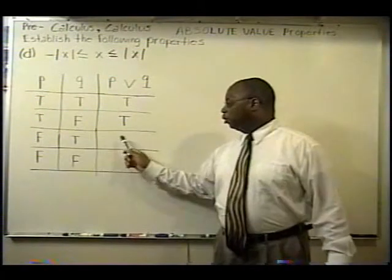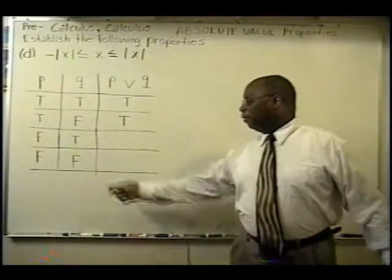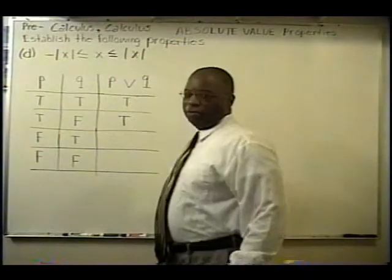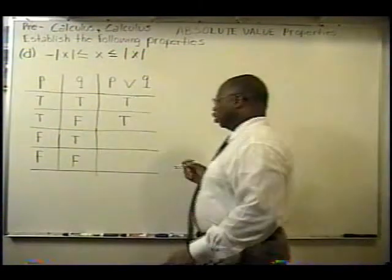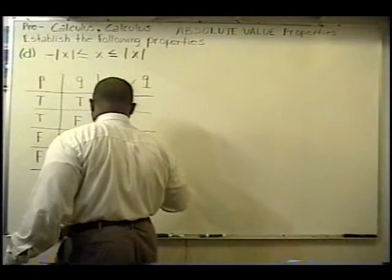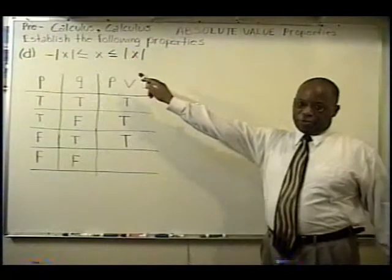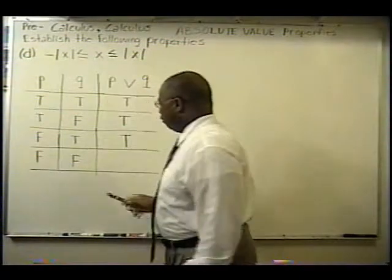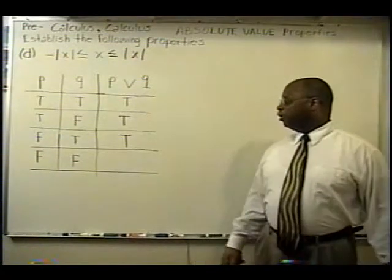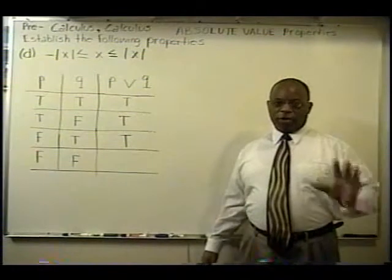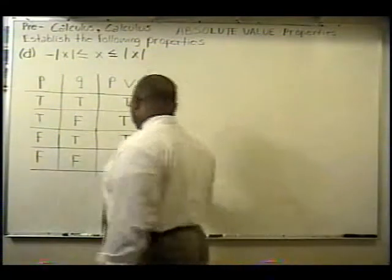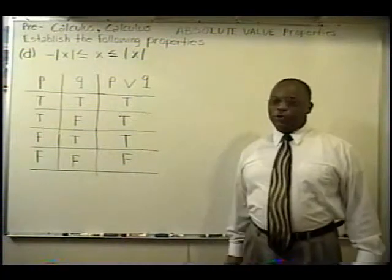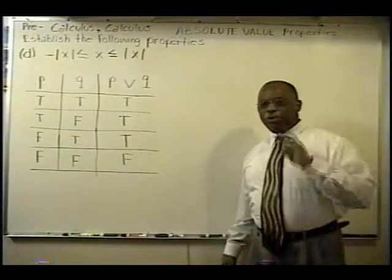Based on that logic, you can also conclude that the next line is a true statement, because again, it says one OR the other — you must have at least one of those be true. We have to understand the truth table to really get the gist of this. What about the last case? Both P and Q are false. Since you don't have one OR the other being true, that's a false statement because both statements are false. Therefore, the only time P OR Q is false is when both statements are false.